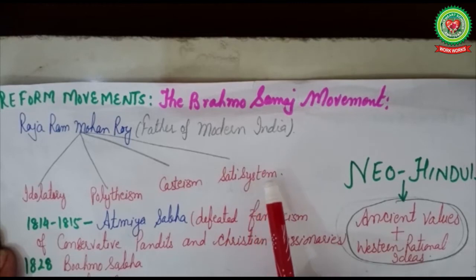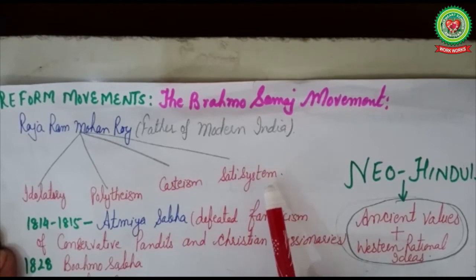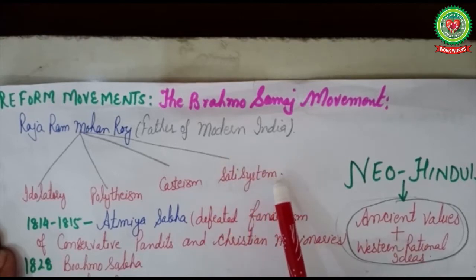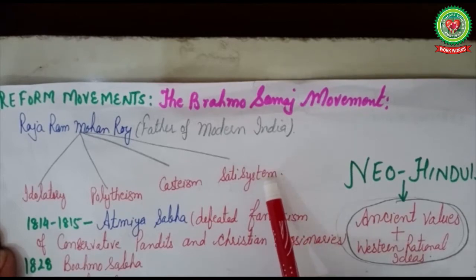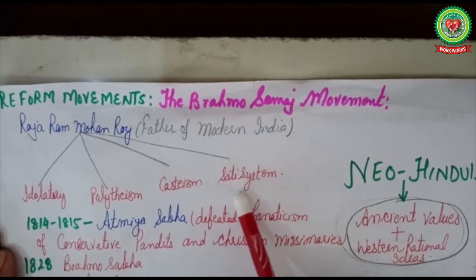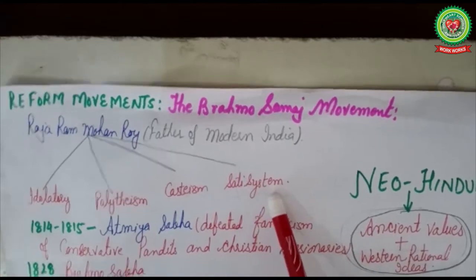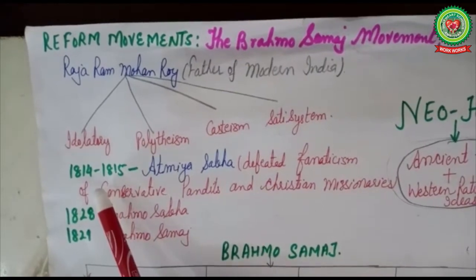When he was only eight or nine years old, his brother died and his sister-in-law was asked to perform Sati. As a child he tried to protest but could not do anything. He was determined that when he received education and came back to India, with the help of the British he would end this system. The credit for ending Sati goes to Raja Ram Mohan Roy, who with the help of Lord William Bentinck abolished the Sati system in India.